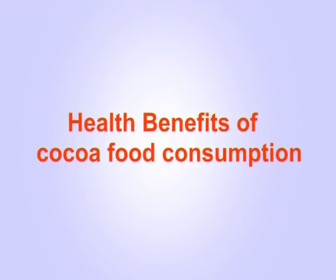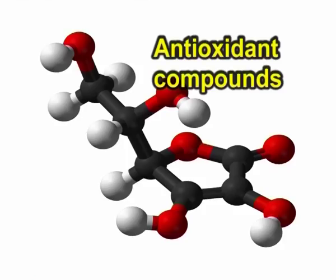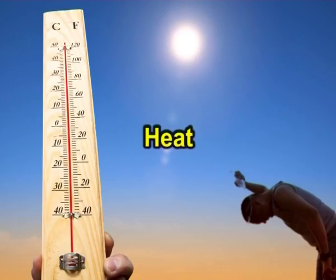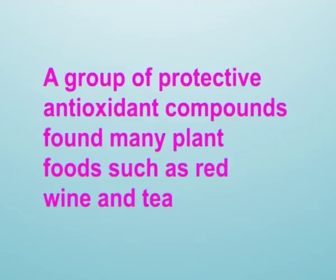Health benefits of cocoa: cocoa contains over 700 known compounds, and there may be more undiscovered. Of particular interest to scientists are the antioxidant compounds in cocoa. Antioxidants are compounds that plants manufacture to prevent their own cells from premature destruction due to exposure to heat, light, air, moisture, and time. In the human body, many of these compounds prevent reactive oxygen species from destroying cells and causing premature aging and disease. Cocoa beans are especially rich in polyphenols, a group of protective antioxidant compounds found in many plant foods such as red wine and tea.